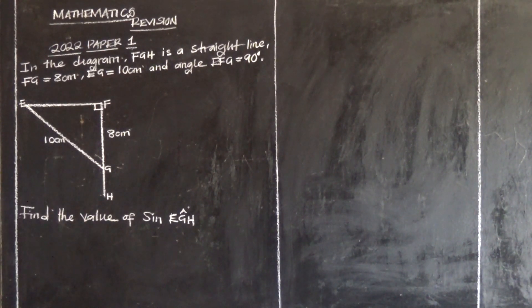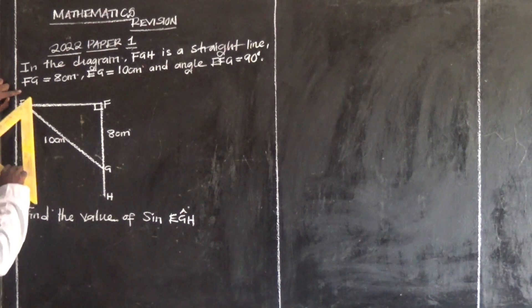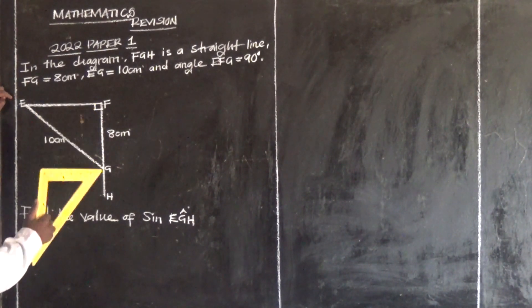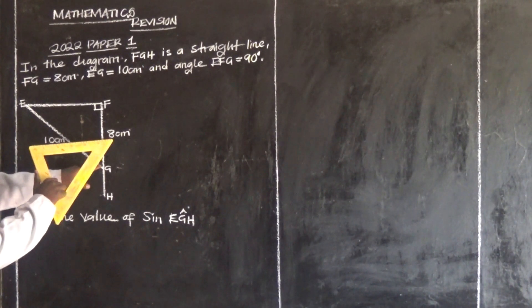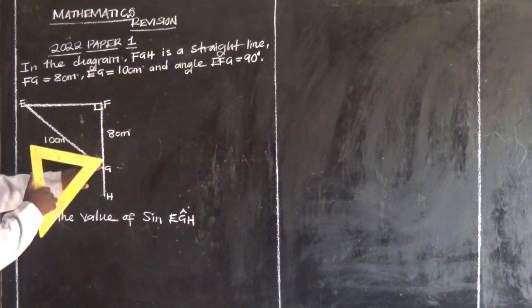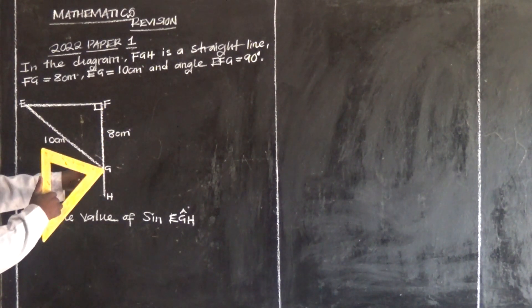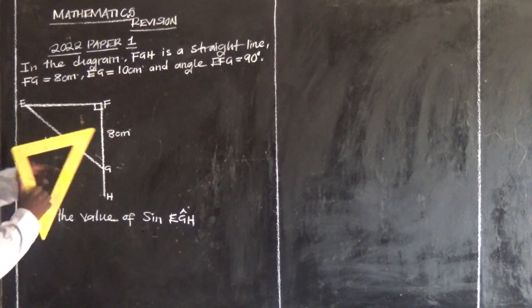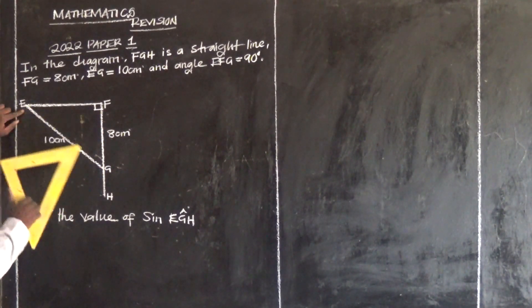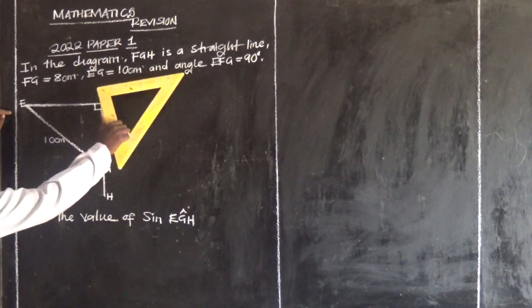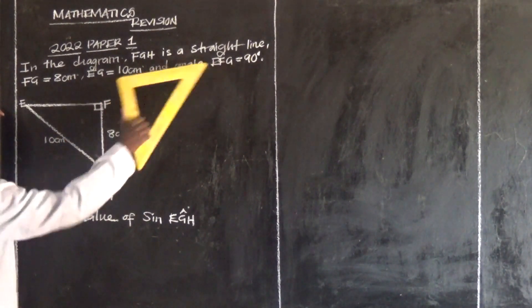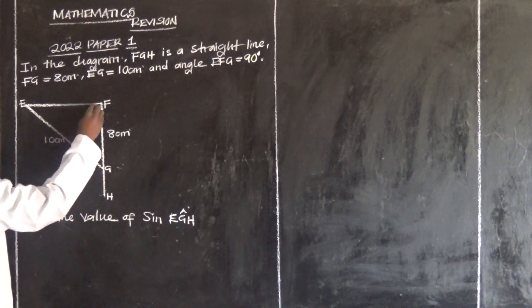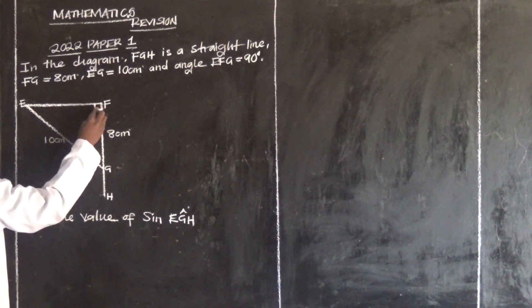From F to G, FG is 8cm. Then EG is also 8cm. And angle EFG is 90 degrees — so this is our 90 degrees here.